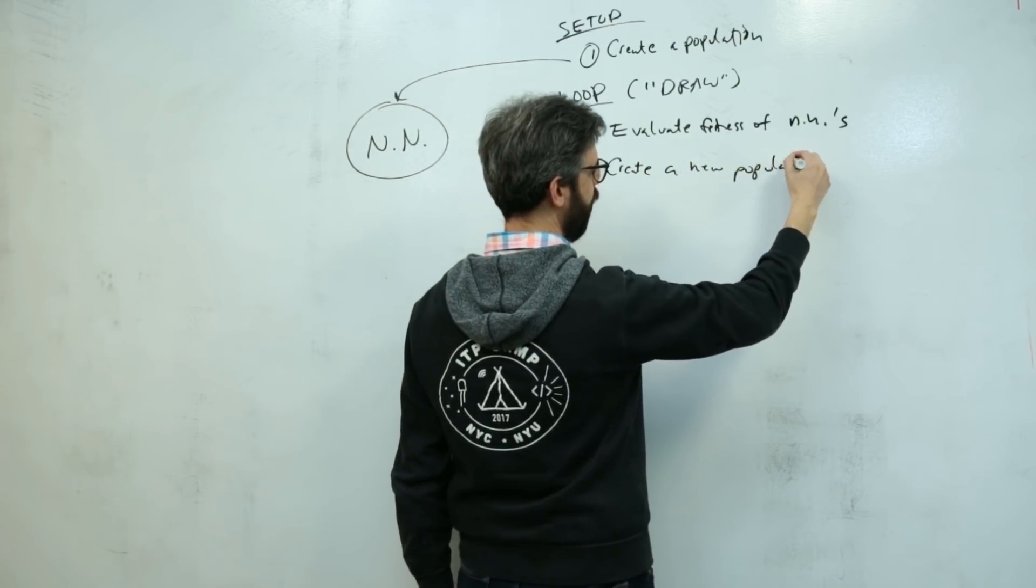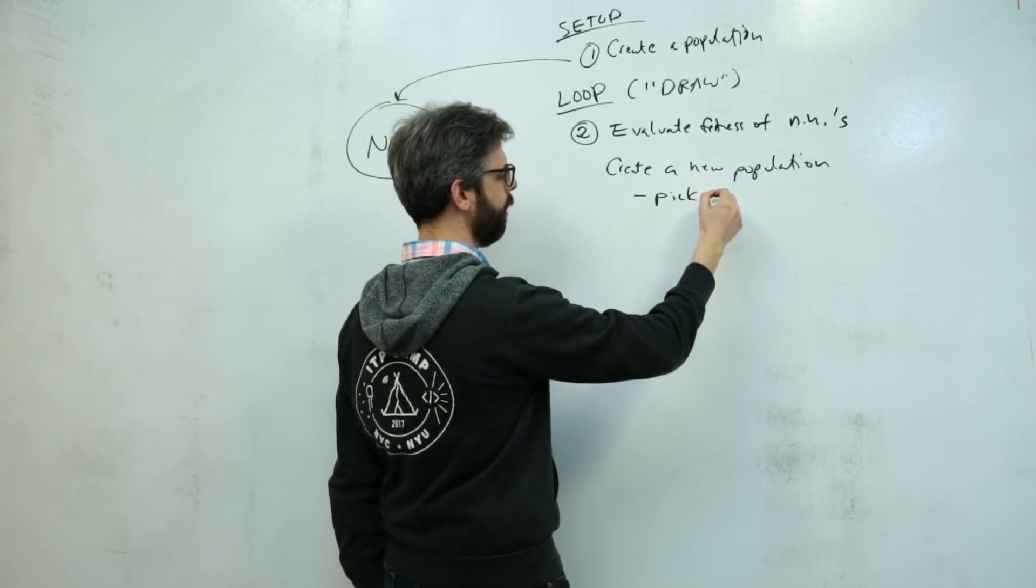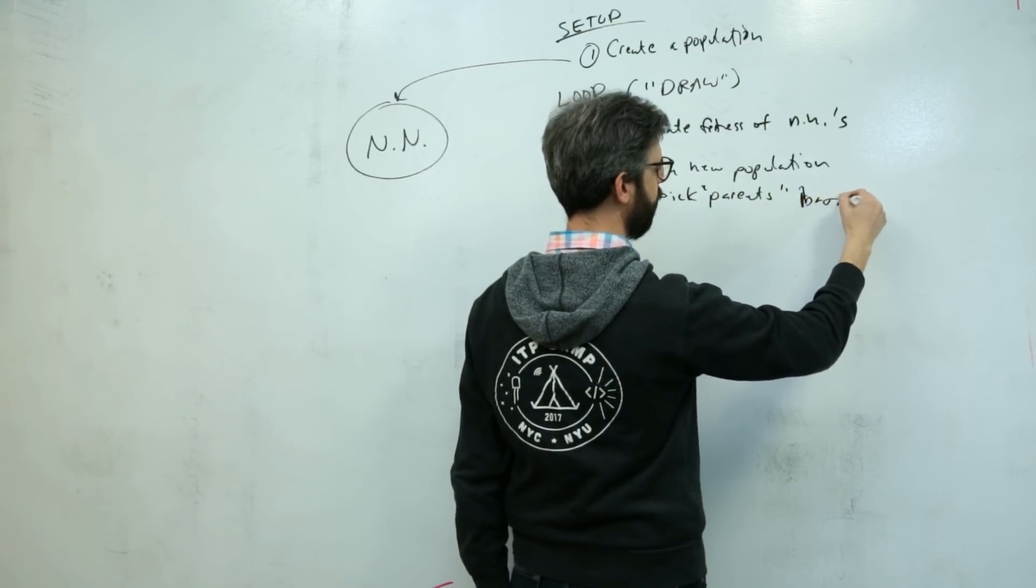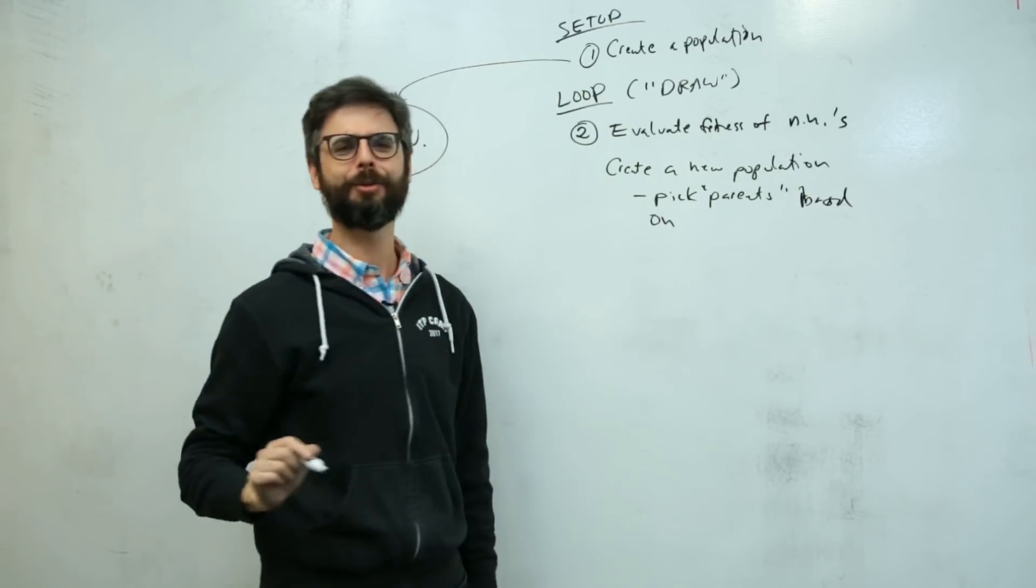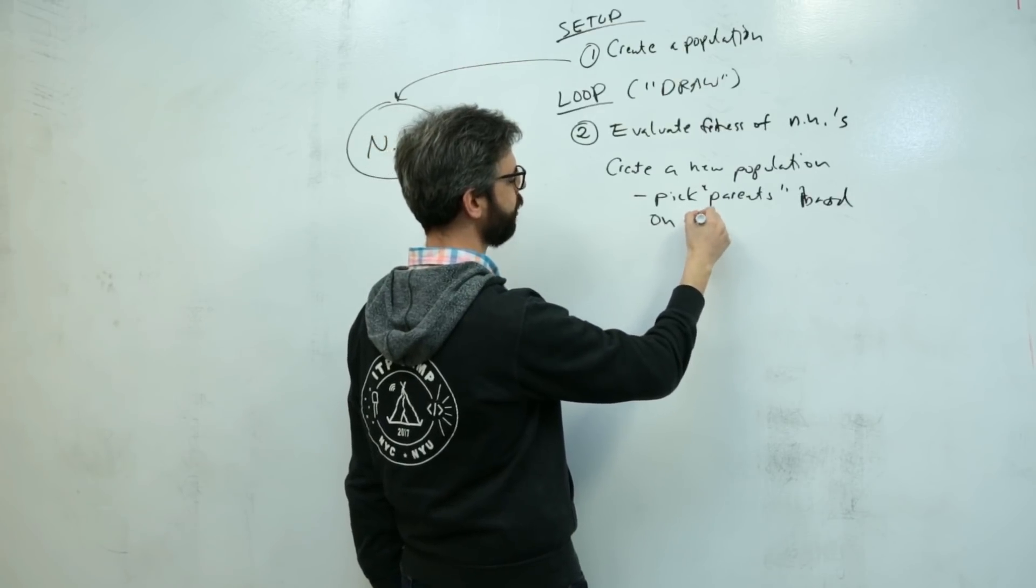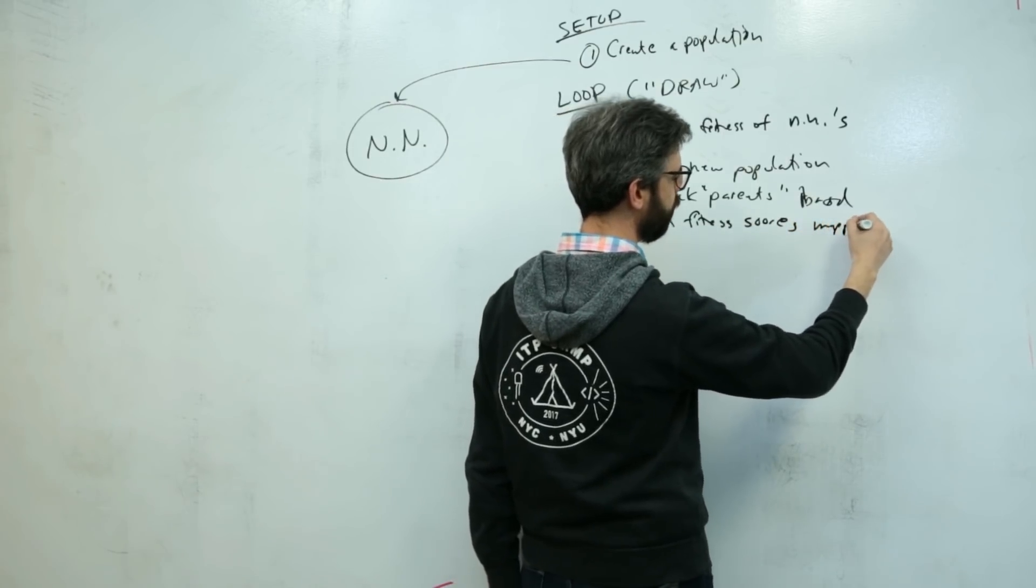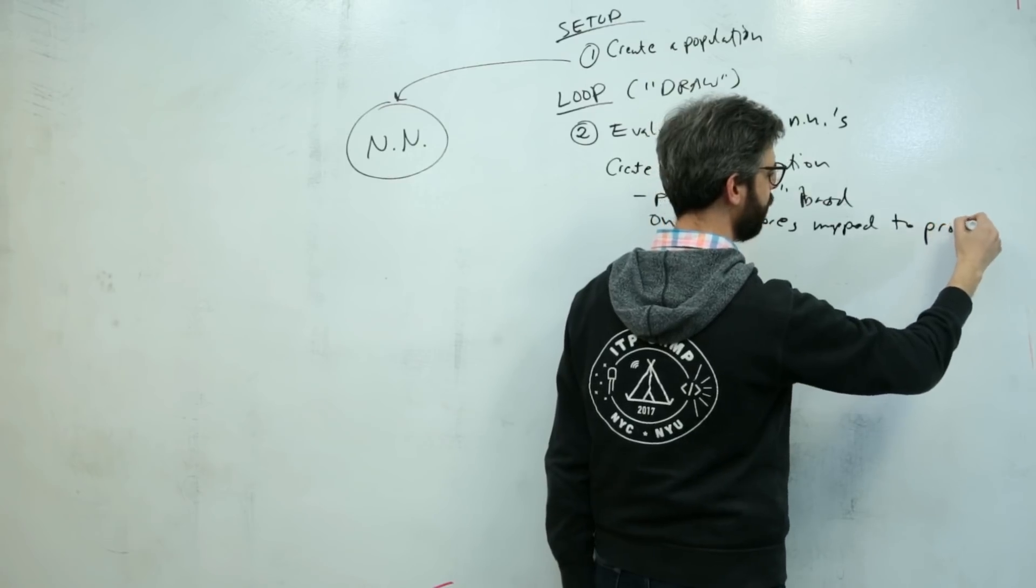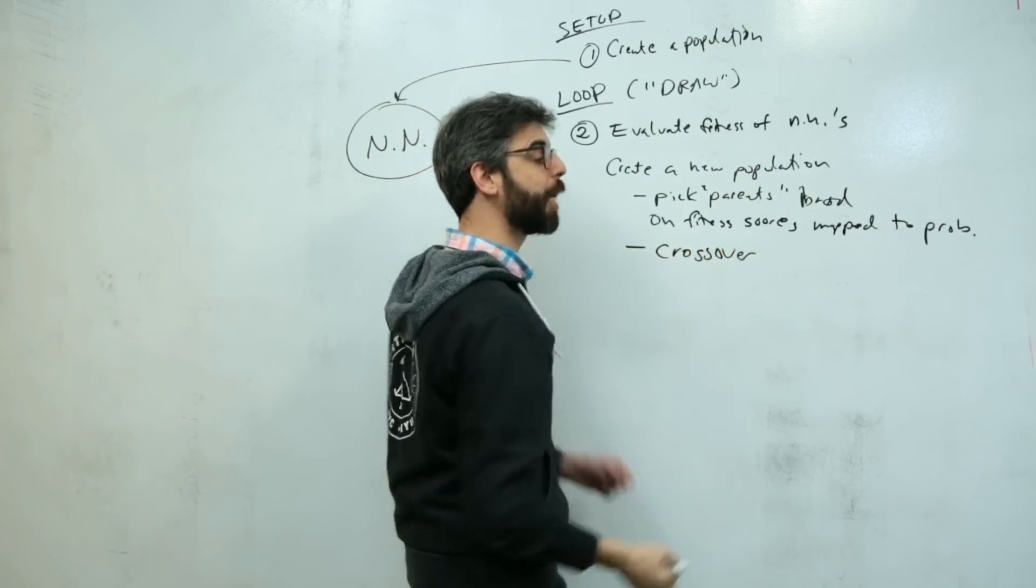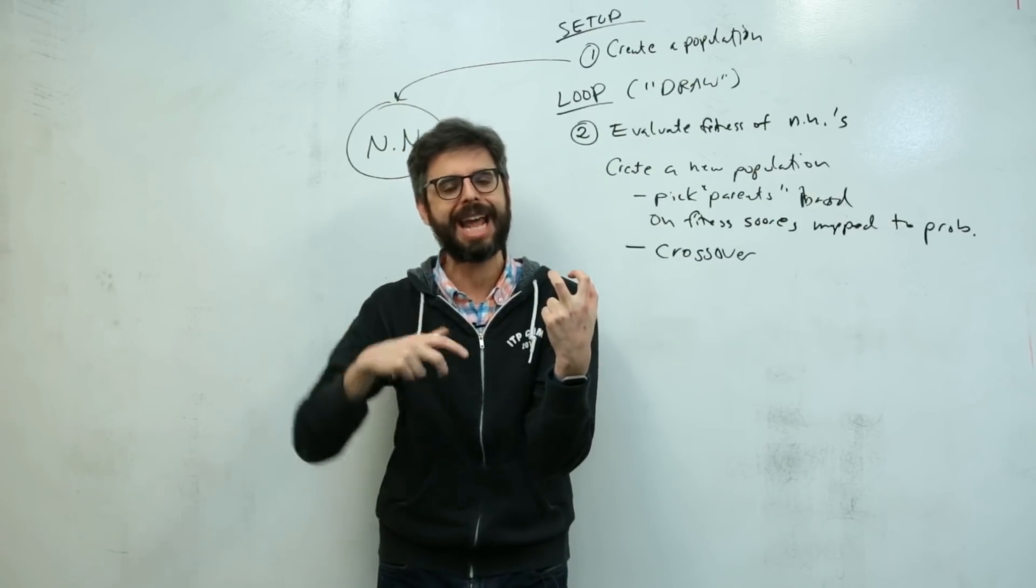The way I will do that is by picking parents based on fitness scores mapped to probability. My handwriting is getting worse over time. Then I want to apply crossover, which is a way if I pick two parents, I can take half of their digital DNA of one and half of the other, or some random amount, and combine them into a new entity.